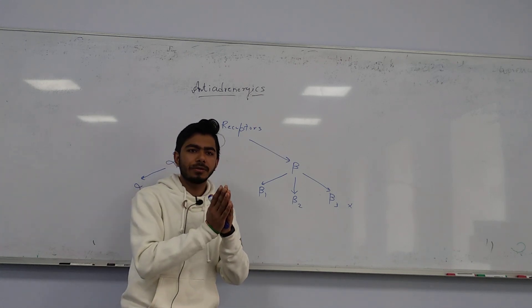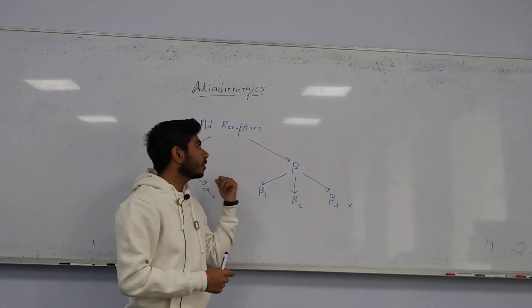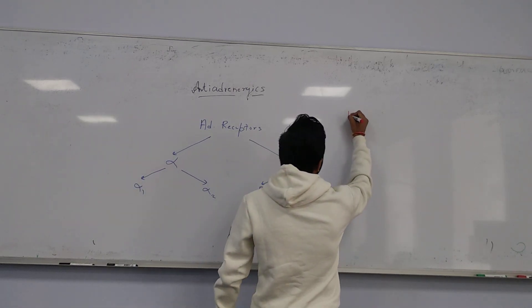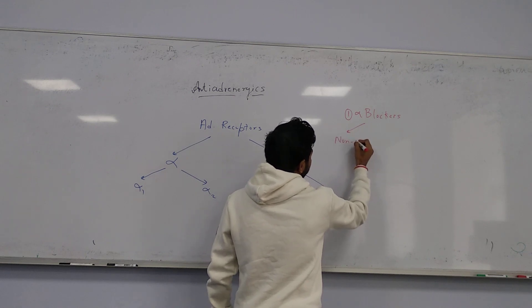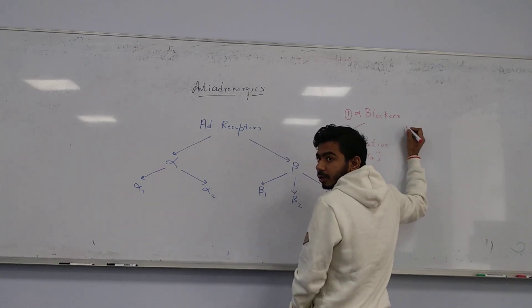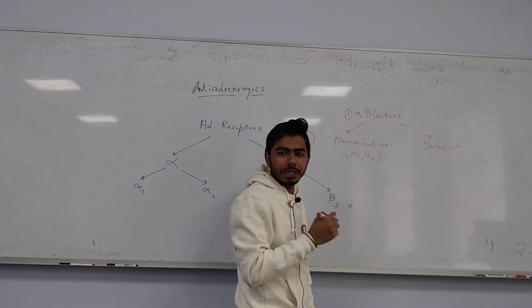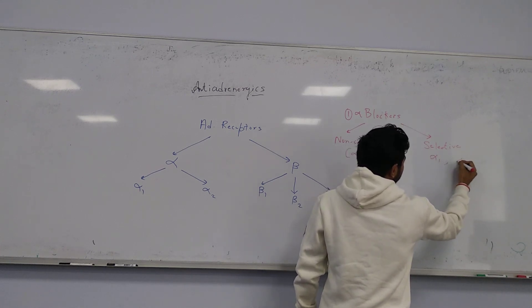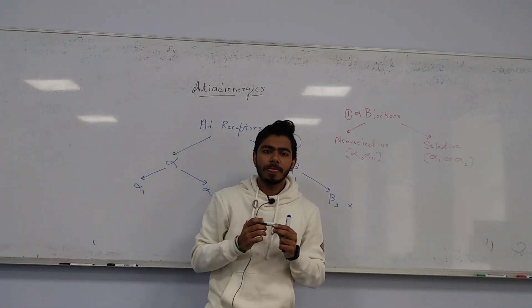Everything today will be the opposite compared to the previous class. We'll first discuss alpha blockers, then beta blockers. Alpha blockers have two categories: non-selective, which can block both alpha 1 and alpha 2, and selective alpha blockers, which selectively block either alpha 1 or alpha 2.